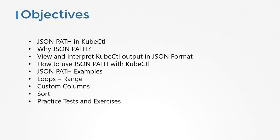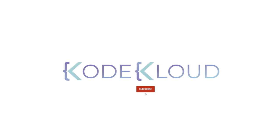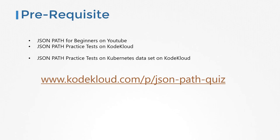Once done, you will go through a set of practice tests where you get to practice what you learn through some fun and challenging exercises. Now before you begin, you must know how to work with JSON path — that's a prerequisite. If you have never worked with JSON path queries before, check out the videos and practice tests on that first. They're available for free on my YouTube or on the codecloud website. It's also good to first practice JSON path on a Kubernetes dataset so that you know how to navigate through it before actually working on JSON path with the kubectl utility.